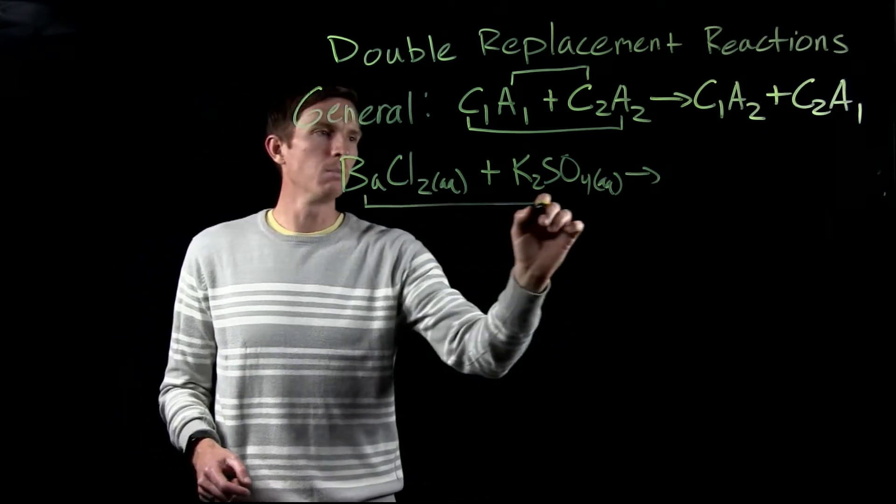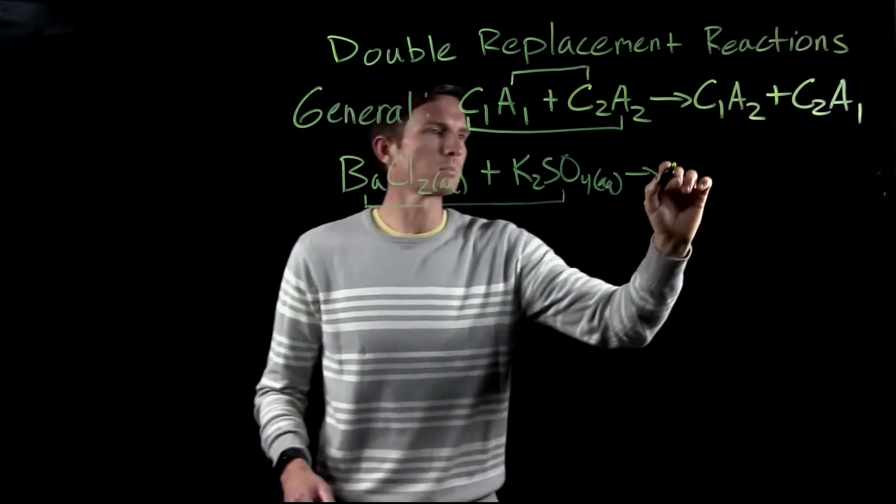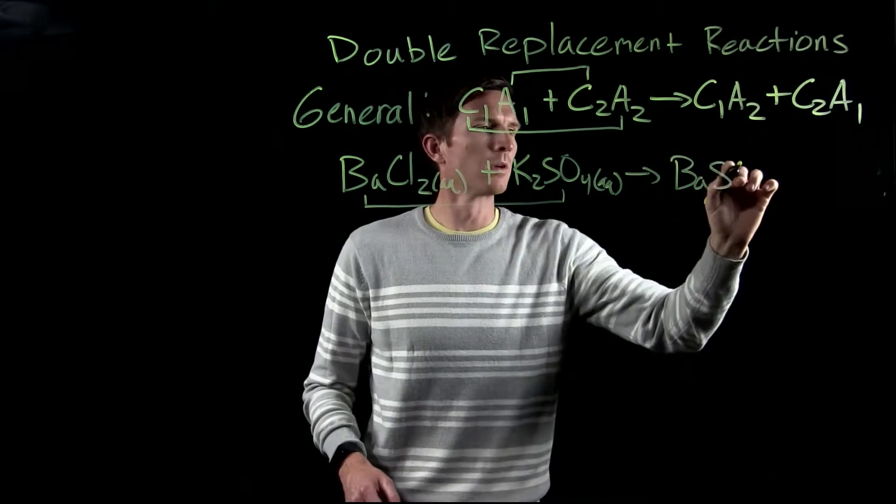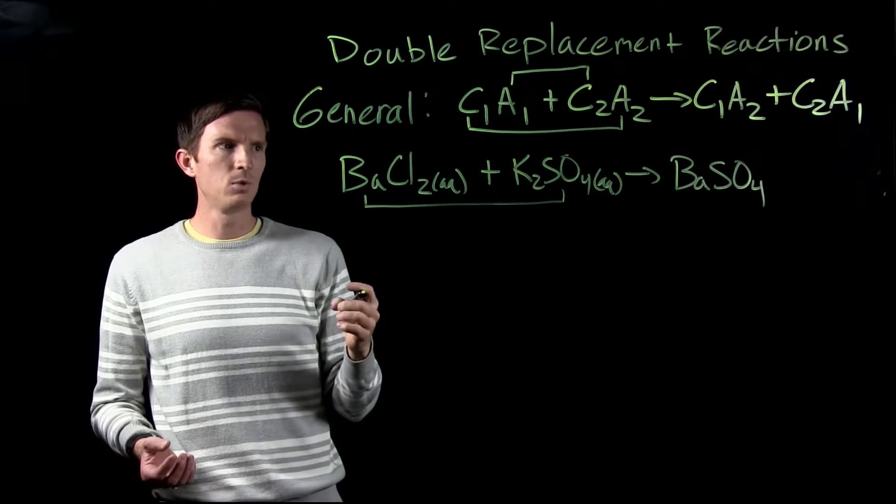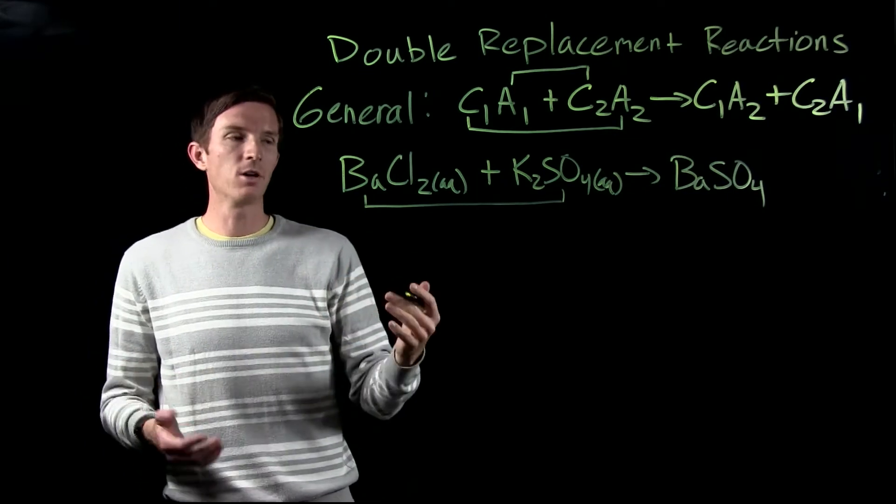Well one of them is going to be barium combined with sulfate to give us barium sulfate. And then we've got to connect these with the correct charges.